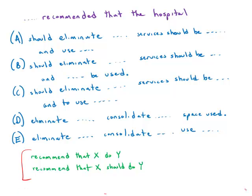We'll look at those two in isolation. Recommend that X do Y. Recommend that X should do Y. On the GMAT, this first one is correct, and the second one is considered redundant. In other words, if we're saying recommend, that implicitly says that we think the person should do it. So it's redundant to say recommend that X should do something.